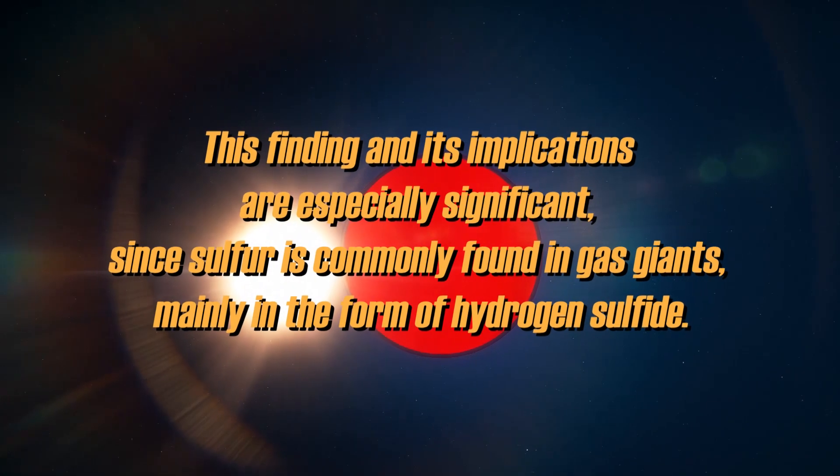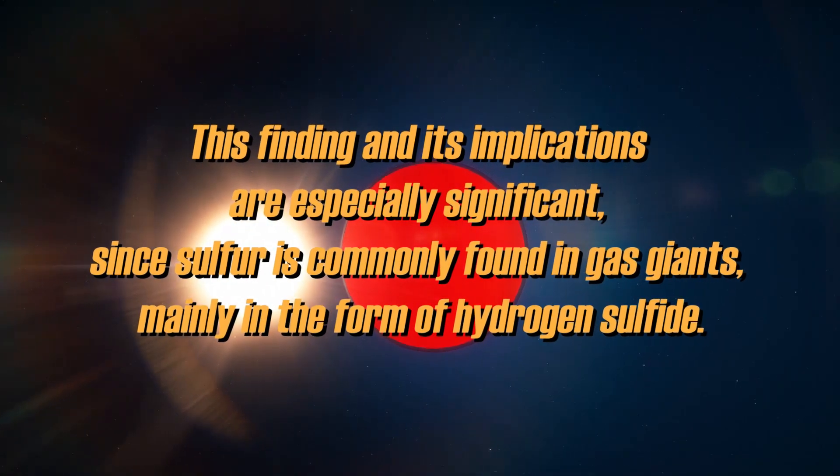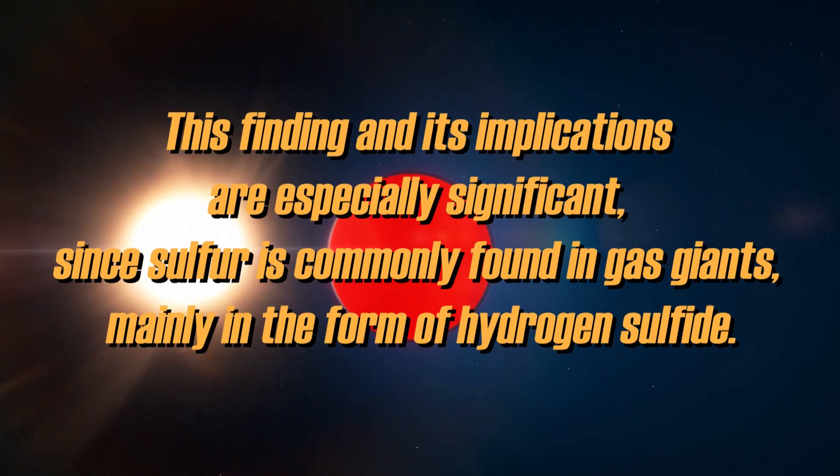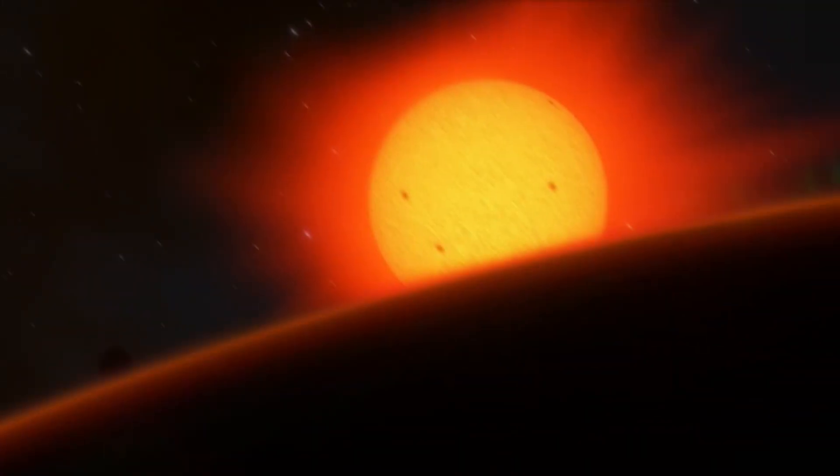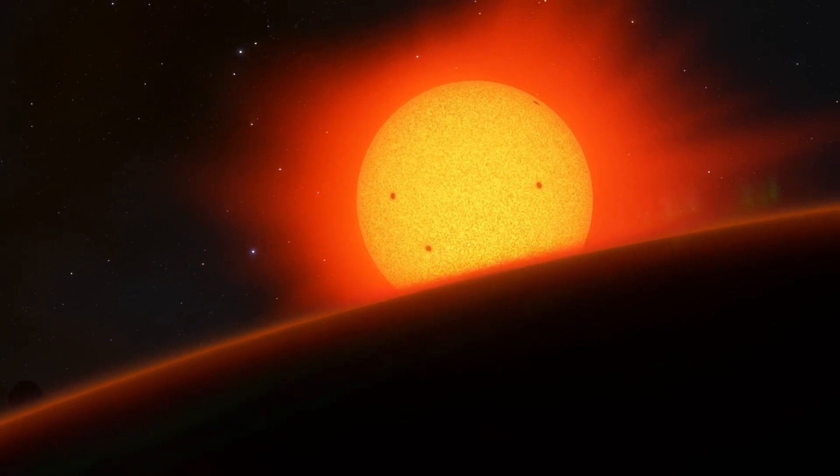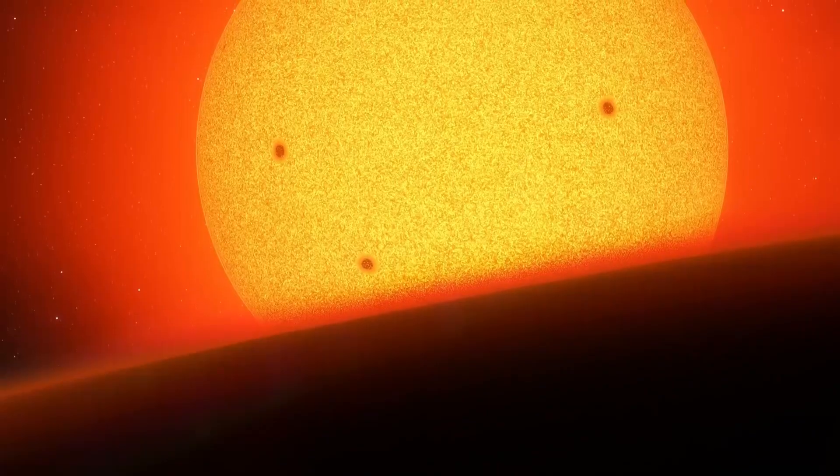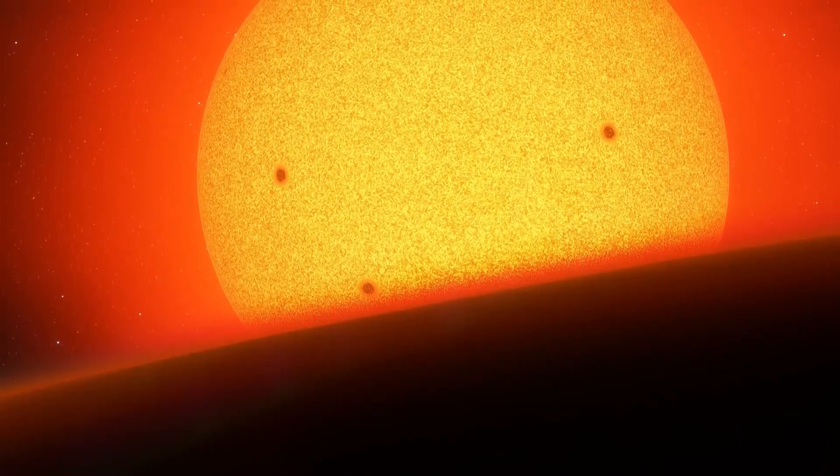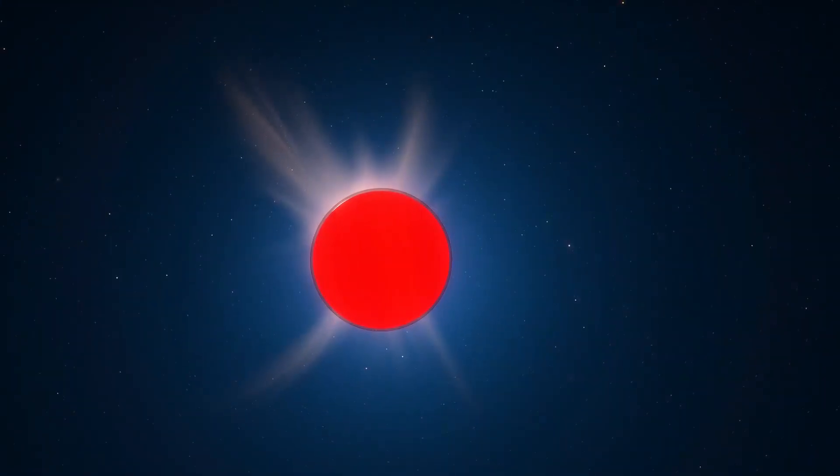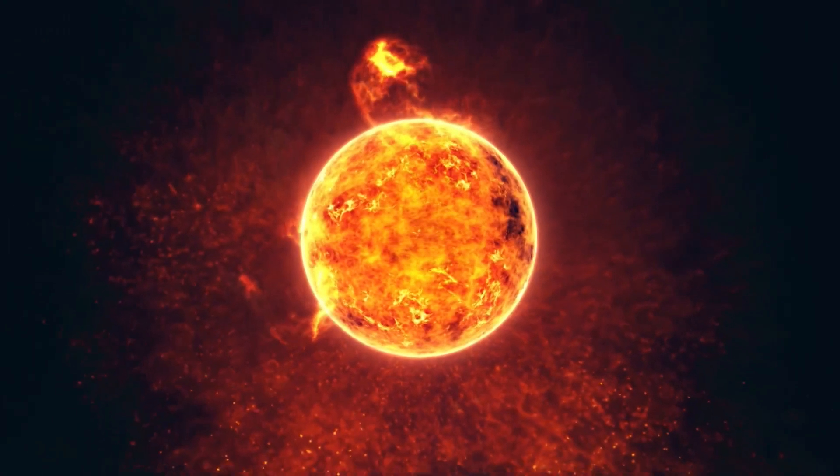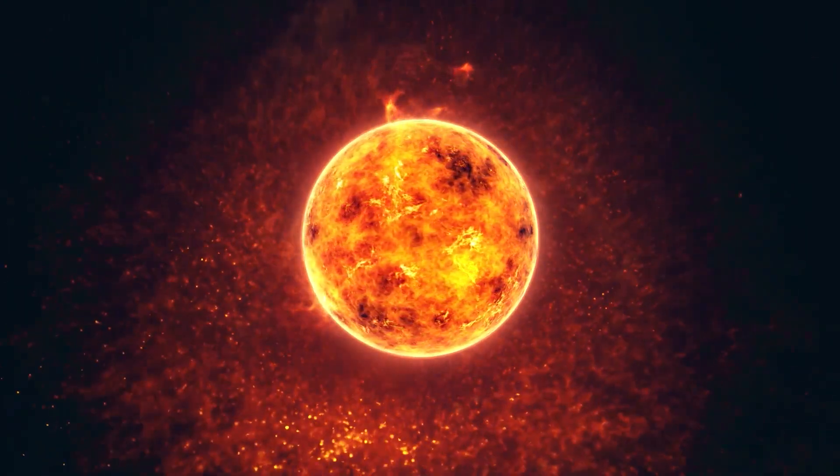This finding and its implications are especially significant since sulfur is commonly found in gas giants, mainly in the form of hydrogen sulfide. This may provide clues to the formation history of the extrasolar world in question. Consequently, the unexpectedly high content of sulfur dioxide, together with the ratios of other elements to oxygen, suggests that the atmosphere of WASP-39b contains up to 30 times more heavy elements than the sun.